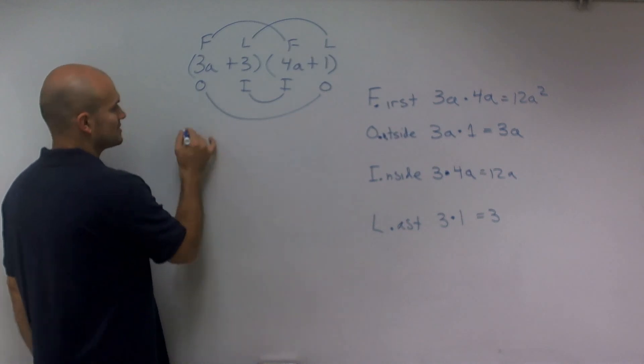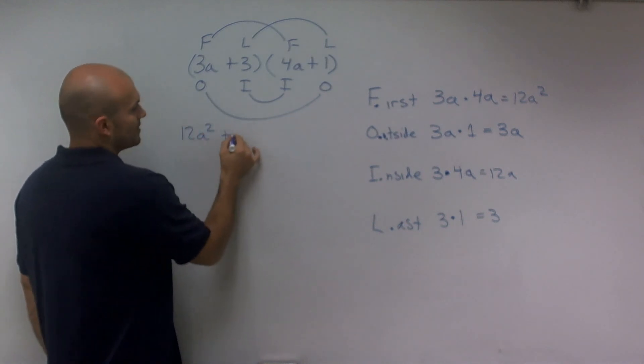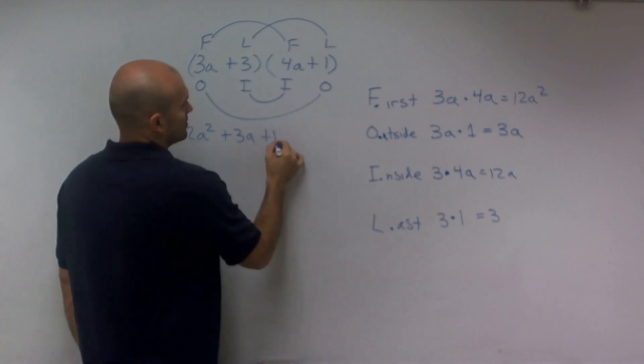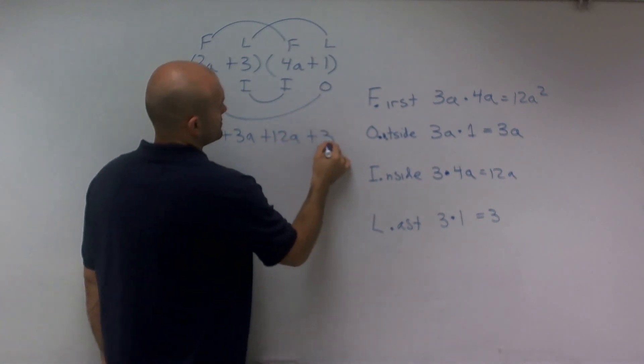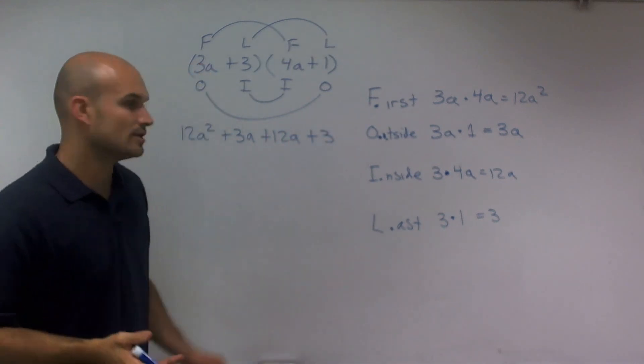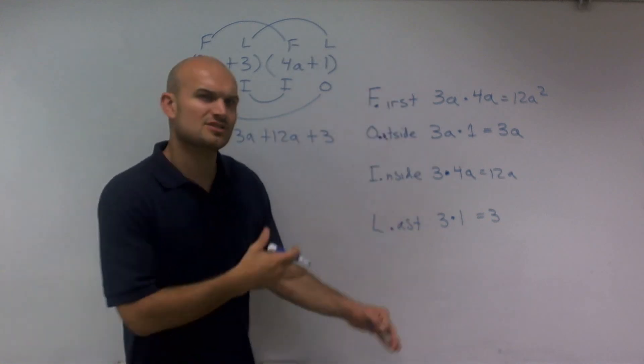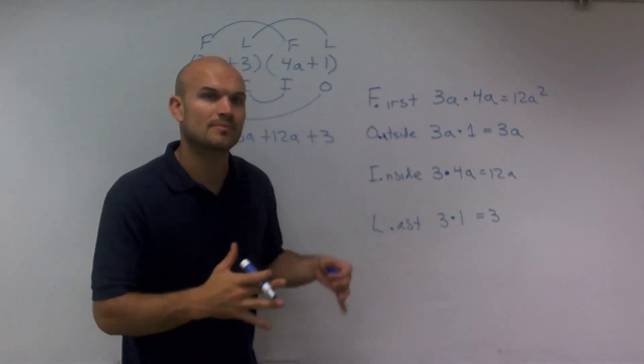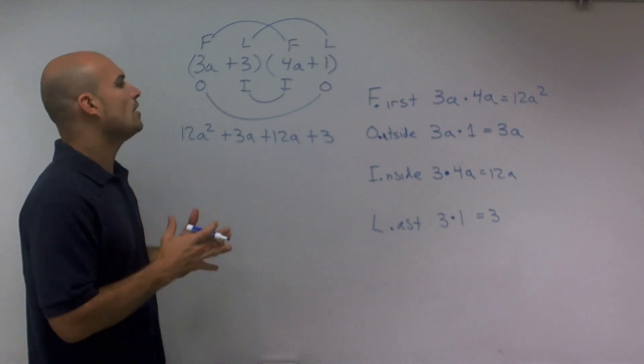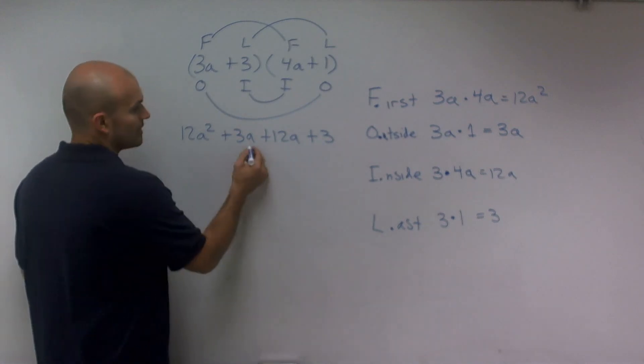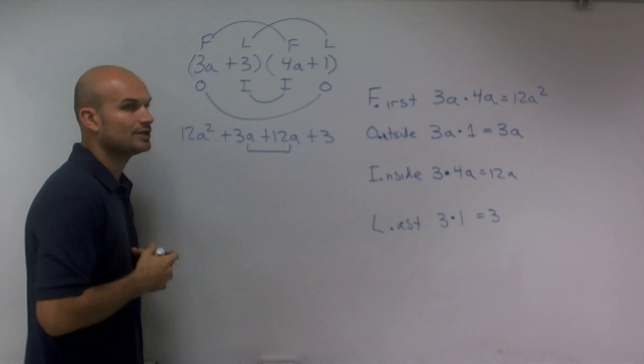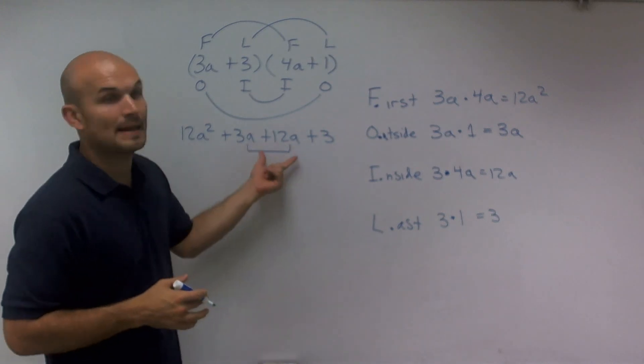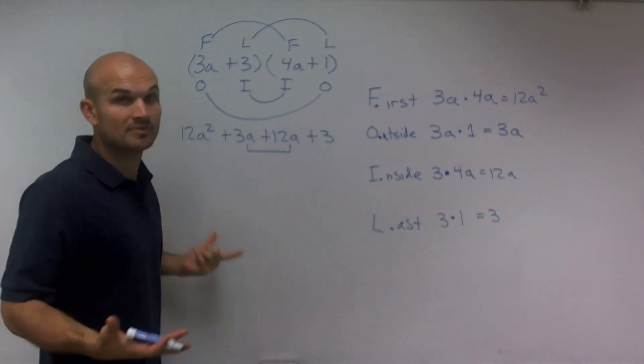And what I'm going to do is I'm just going to write them out. So I have 12a squared plus 3a plus 12a plus 3. Now it's important to write them in order as you did them, just so therefore you don't have to regroup them as you're trying to combine like terms. So now what I want to do is combine like terms. Well I notice that these two inner terms both have the same base and exponent so I can combine them.